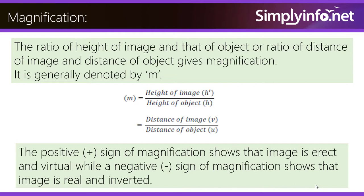The positive sign of magnification shows that the image is erect and virtual, while a negative sign of magnification shows that the image is real and inverted.